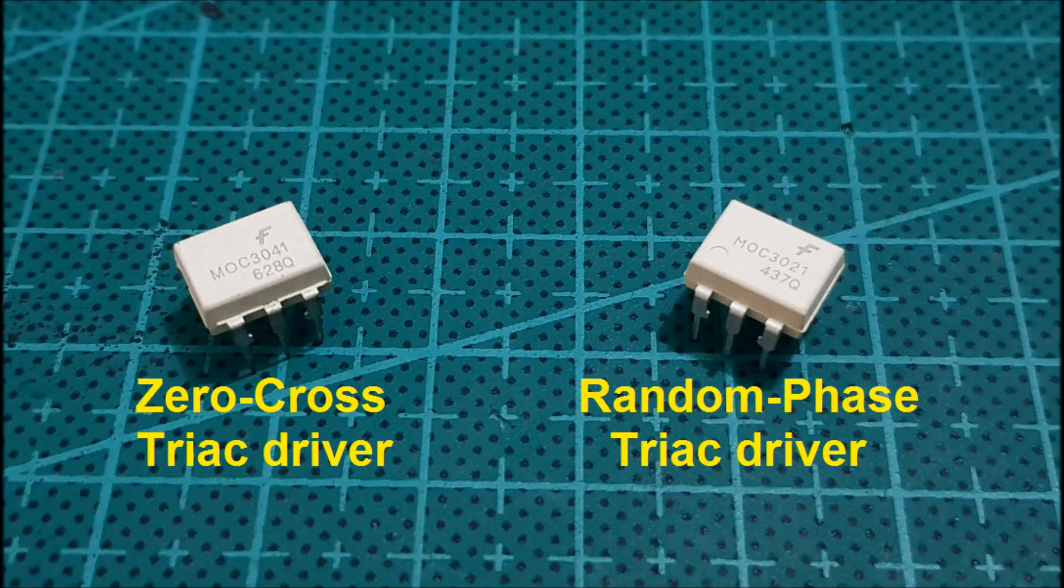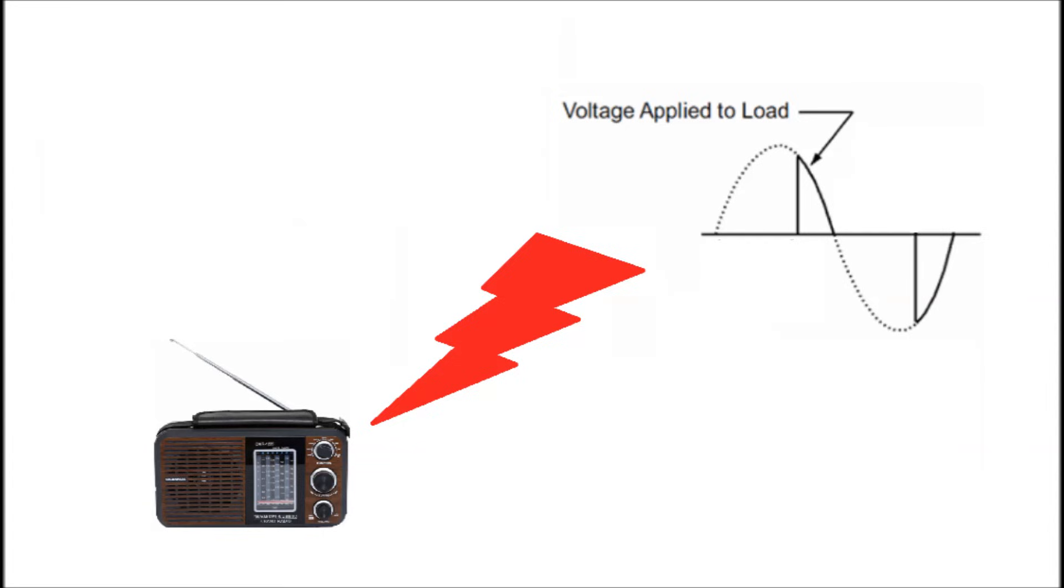But what is the advantage of a triac driver with zero cross detection? If you turn on or off the current going to the load at random point when the voltage is more than zero volt, that causes electromagnetic interference, which can make noise on the AM radio and other RF devices. This is why we need a triac driver with zero cross detection.